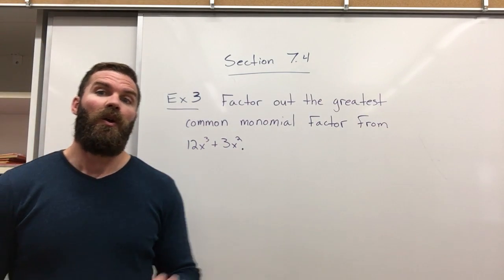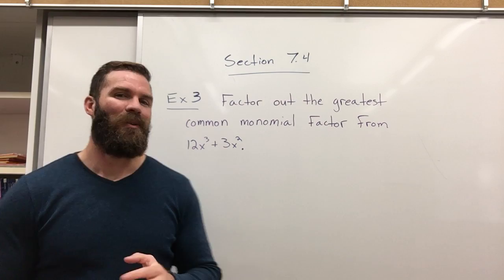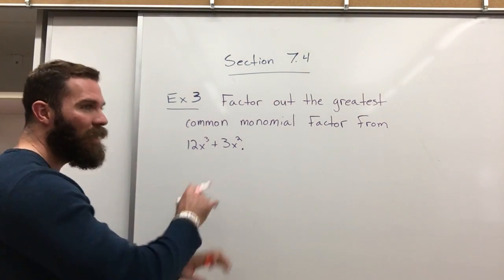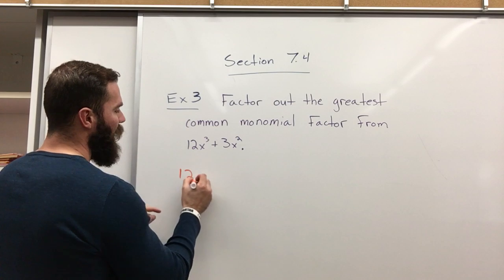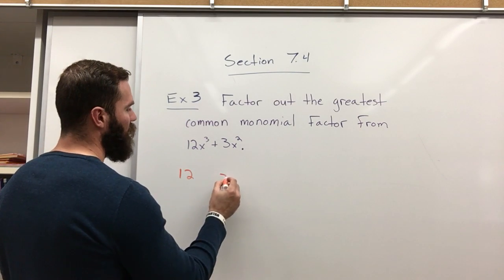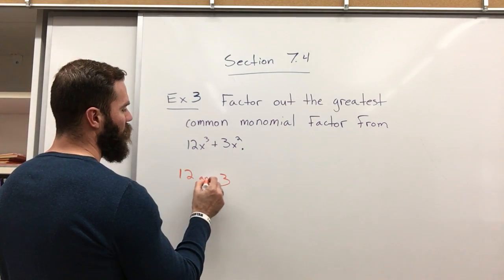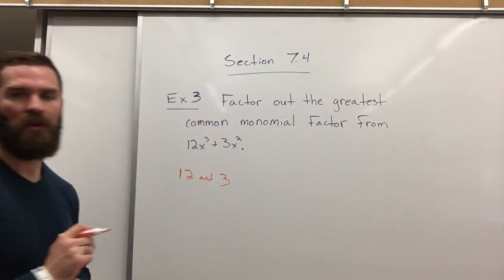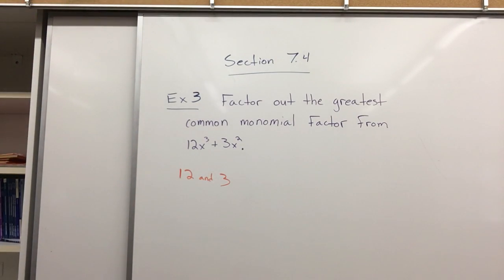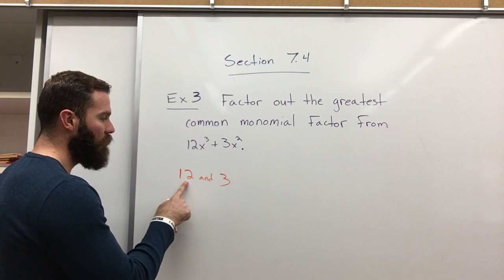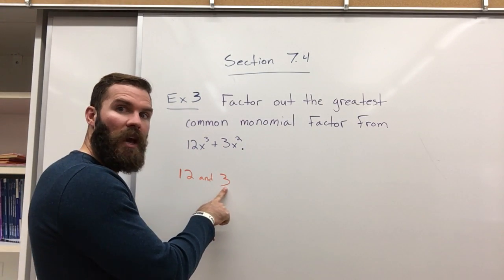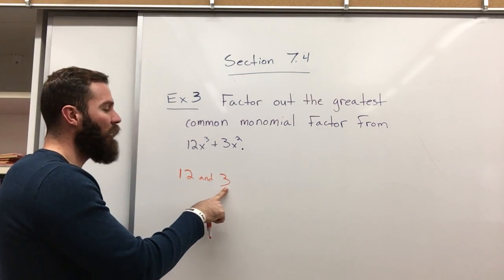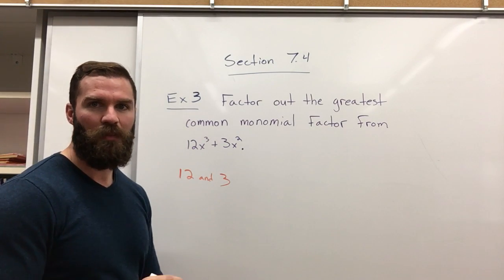So, greatest common factor. What number, the greatest number, would go into both the 12 and the 3? What number goes into these two numbers? Well, 3 goes into 12 four times, 3 goes into 3 one time, and there's no other number that can go into both of these that's bigger than 3.